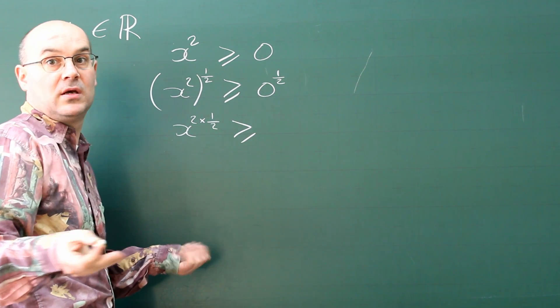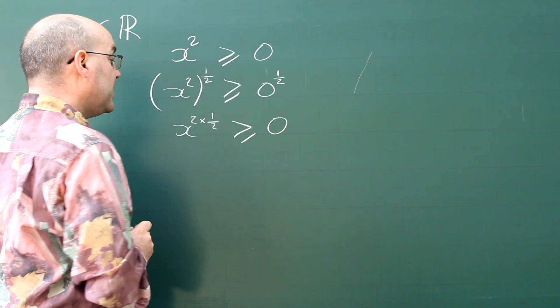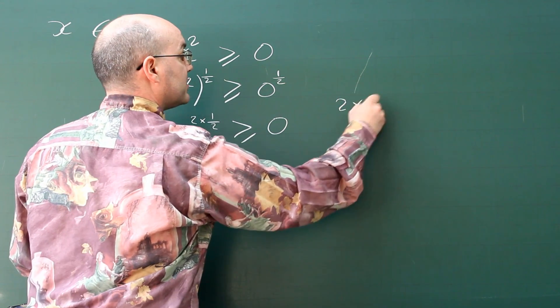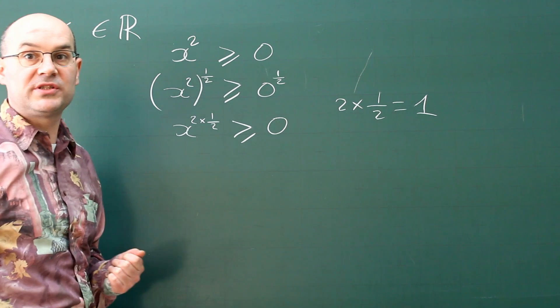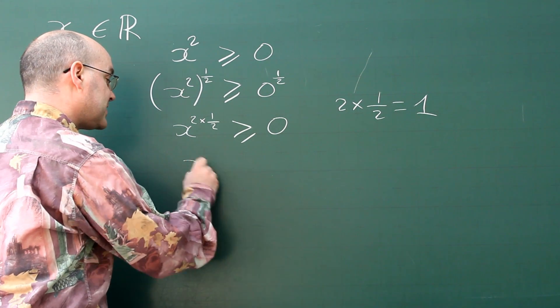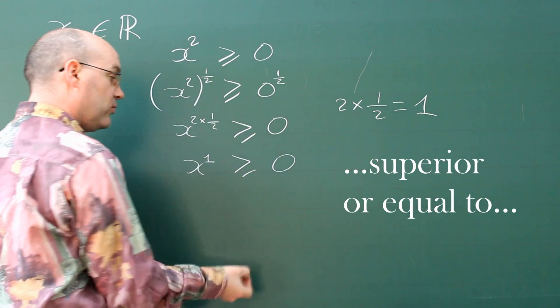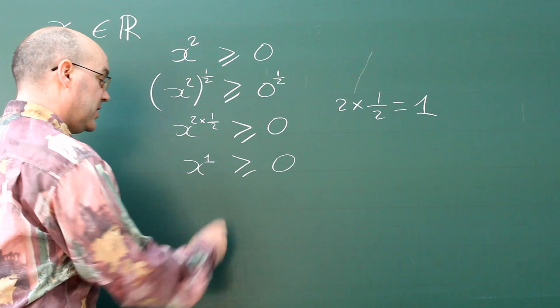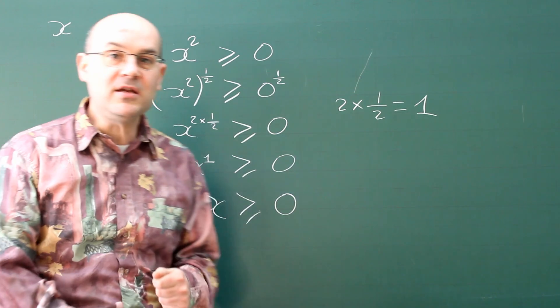So we have this, and we know that two times a half is actually equal to one. No mystery there. So we have X to the power one equals zero. And everybody knows that X to the power of one is actually X, which means that any number is always positive.